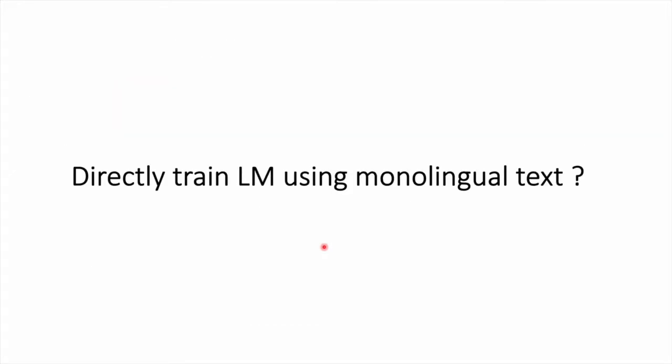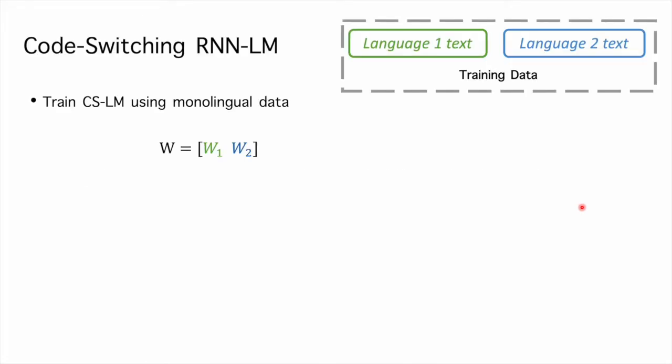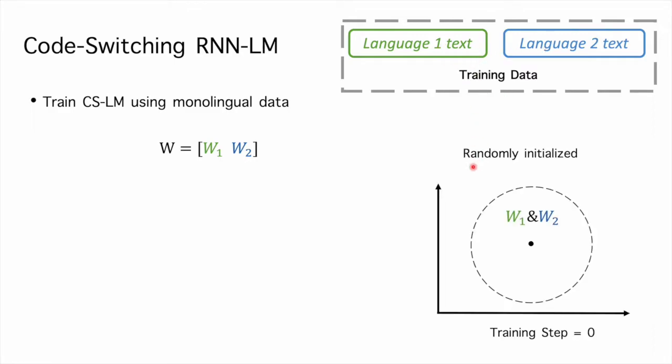Let's see what would happen if we simply train the RNN language model on the monolingual dataset of language 1 and language 2. Our training data is pure monolingual text in language 1 and language 2. The projection matrix is randomly initialized. A simple diagram of it is plotted below.